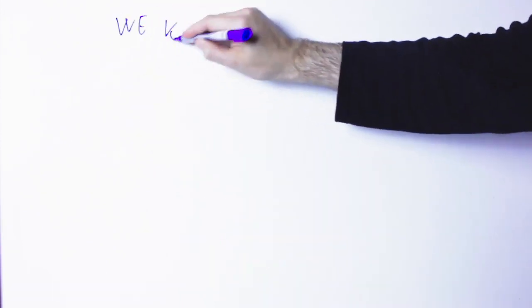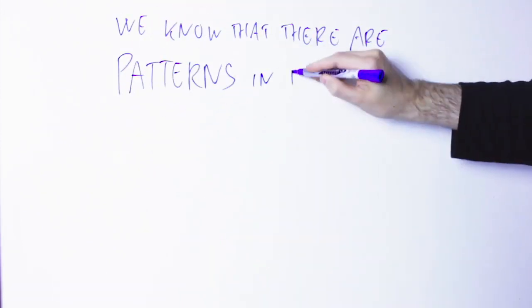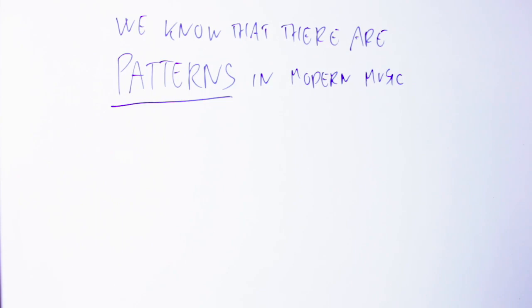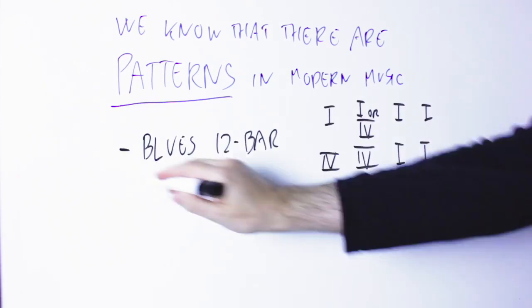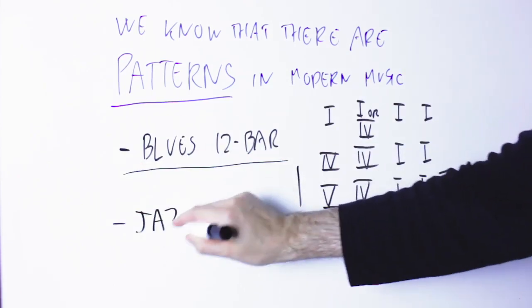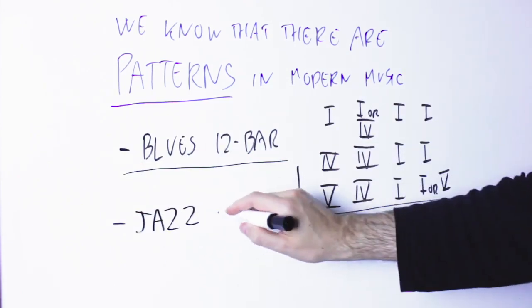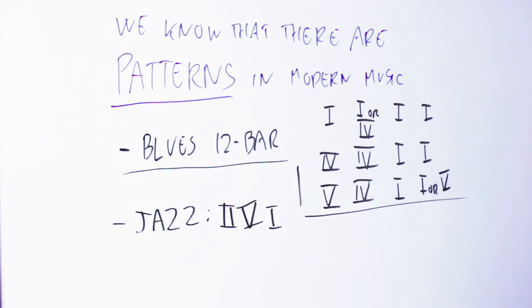We all know that there are some patterns and formulas in modern music. For instance, in blues you have the 12-bar blues chord progression. In jazz you have progressions like the 2-5-1.